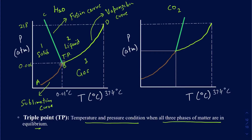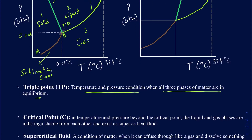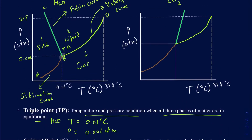The triple point for water requires a temperature of about 0.01 degrees Celsius — not too difficult to achieve. However, the pressure needed is 0.006 atmosphere, which is not something you can get in daily life. That's why you don't really see water existing in all three phases at the same time, although you can achieve those settings in the lab.